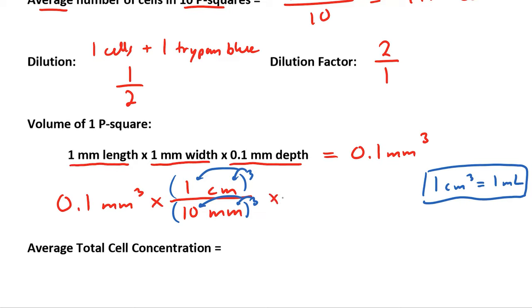After that, we'll convert from centimeters cubed to milliliters. And that's a 1 to 1 ratio. And then we cancel out. Millimeters cubed cancels millimeters cubed. Centimeters cubed cancels centimeters cubed. We're left with milliliters. We have 0.1 divided by 10 to the 3. We have 10 to the minus 4 milliliters. So the volume of 1 P-squared is 10 to the minus 4 milliliters.